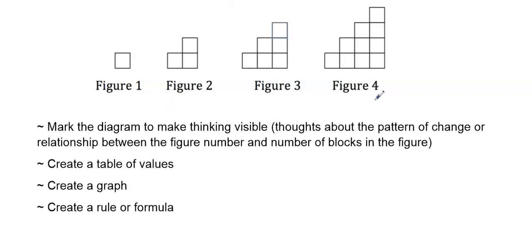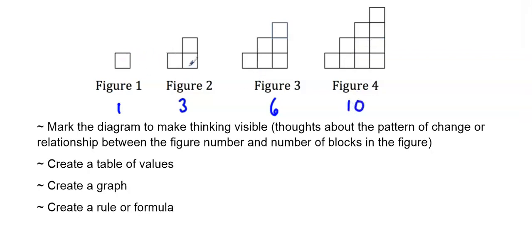Let's look closely at each figure. In figure one, there's a total of one block. Figure two has a total of three blocks. Figure three has six blocks and figure four has ten blocks. Looking at how it's changing: figure one has one, then two more were added to get figure two. It's like it got a bottom row each time.